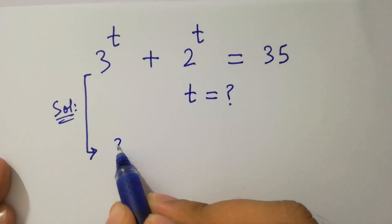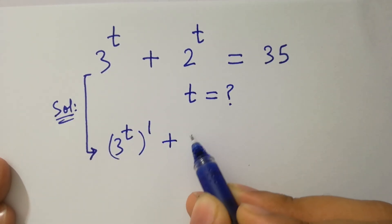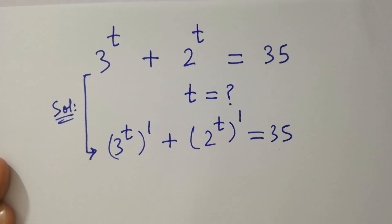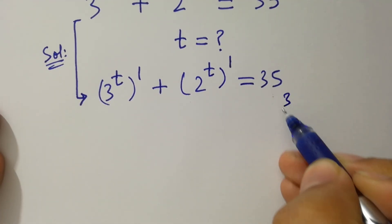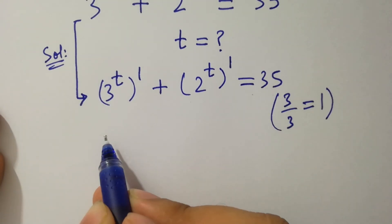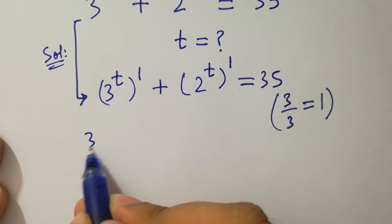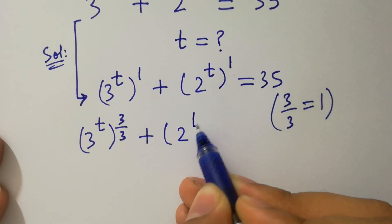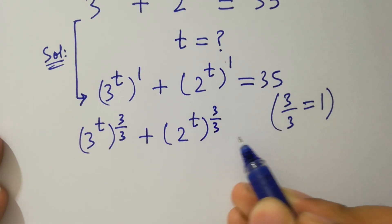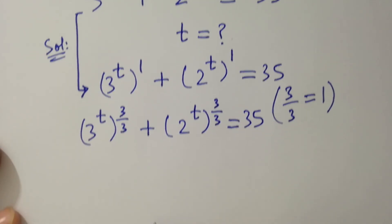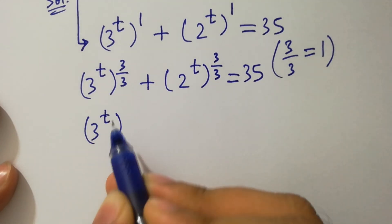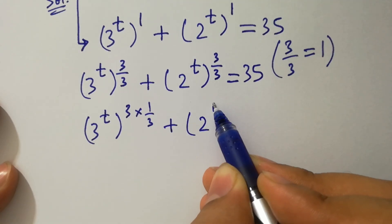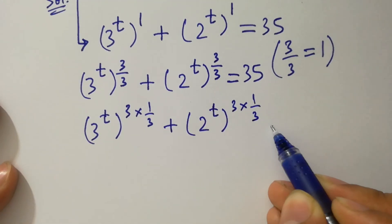It can be written as 3 to the power t, to the whole power 1, plus 2 to the power t, to the whole power 1, equals 35. Since 3 over 3 equals 1, we can write the exponent as 3 times 1 over 3 for both terms: 3 to the power t, whole power 3 times 1 over 3, plus 2 to the power t, whole power 3 times 1 over 3, equals 35.